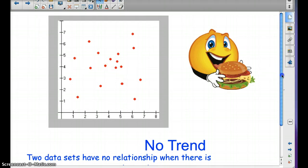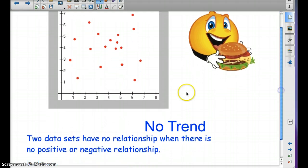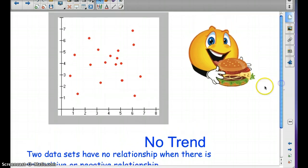The third option is no trend at all. Two data sets have no relationship when there is no positive or negative relationship. I'm sure you could look at all of these and think of situations in which, as one value goes up, the other value goes up as well, in a real-life situation.